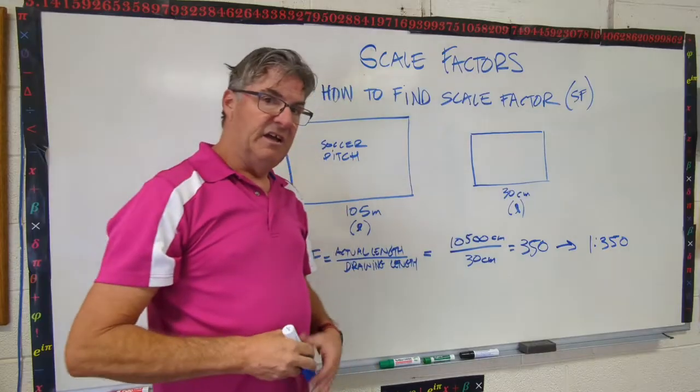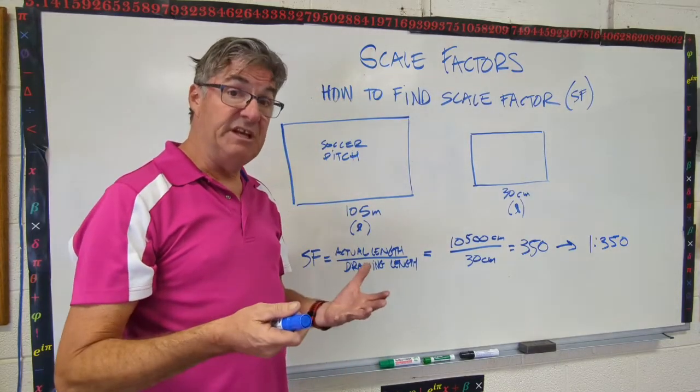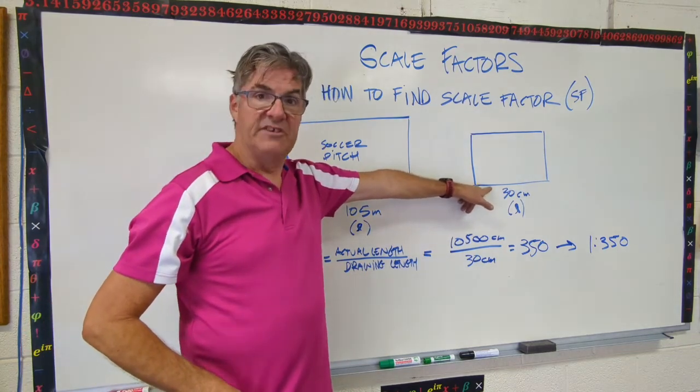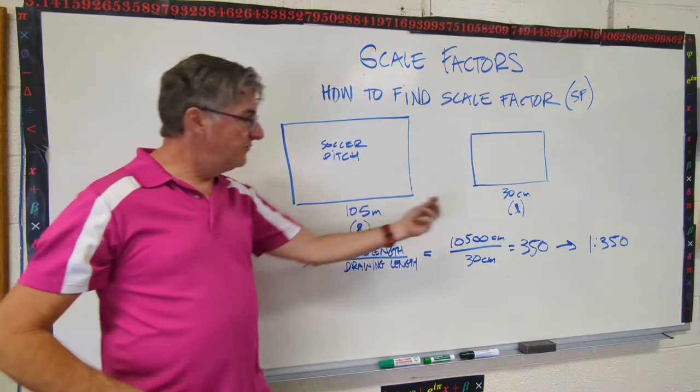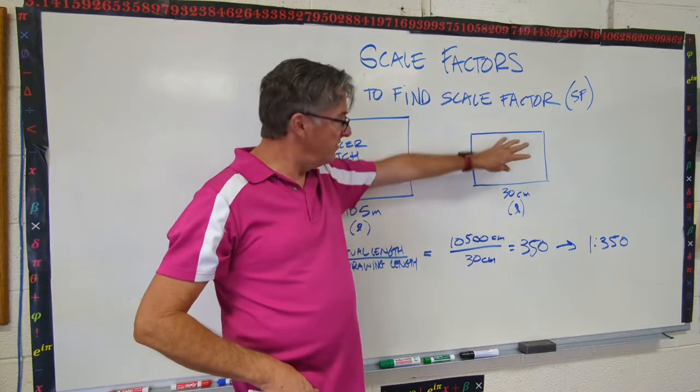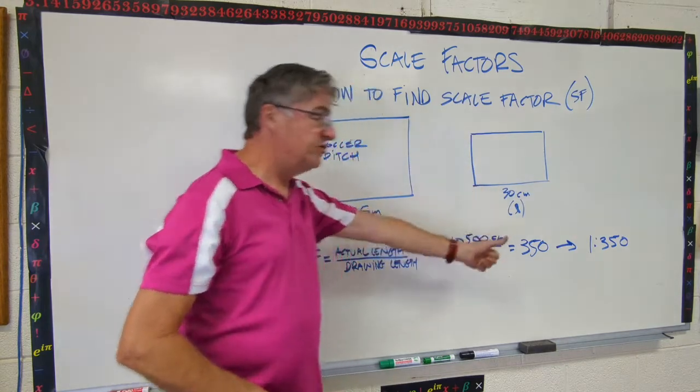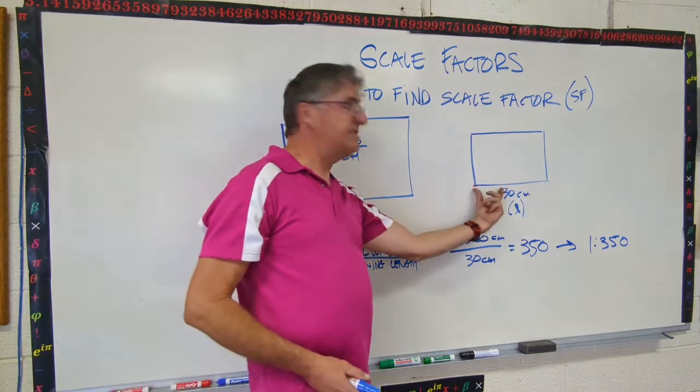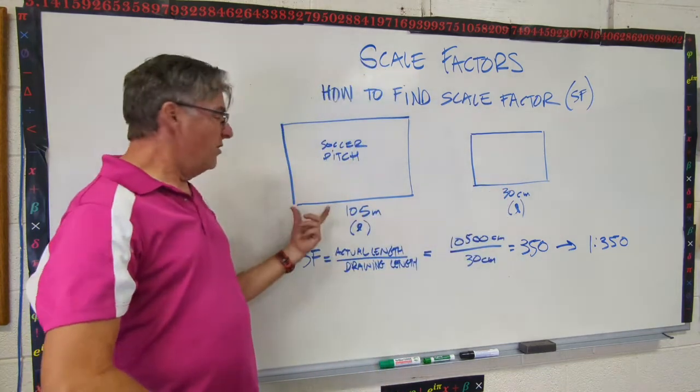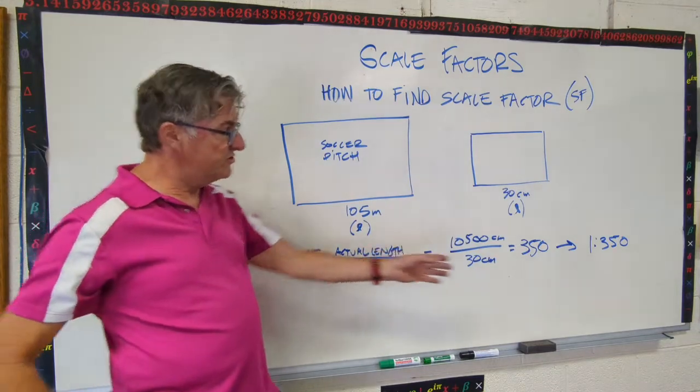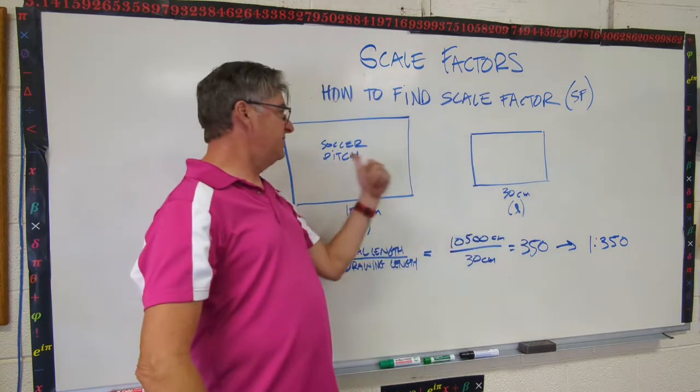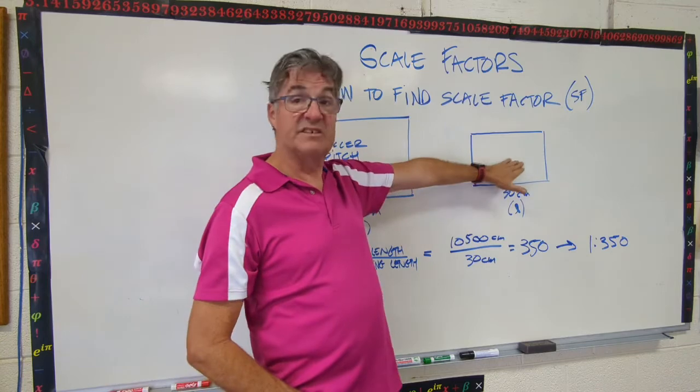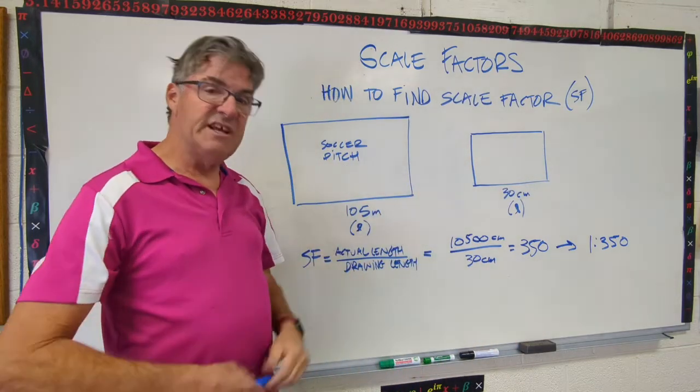So what this means is the scale factor is a one to 350. Okay. And so there's something that has a very specific meaning in terms of our drawing. That means every unit here is 350 units in reality. So if you measure a centimeter on this diagram, that length here, when you translate it to reality, is actually 350 centimeters. If I measured 10 centimeters here, then it would be 3,500 centimeters there. You just use that scale factor. You multiply this way to get the real length, or you divide by the scale factor from the real length to get the scaled length. Okay. So that's basically how you do it.